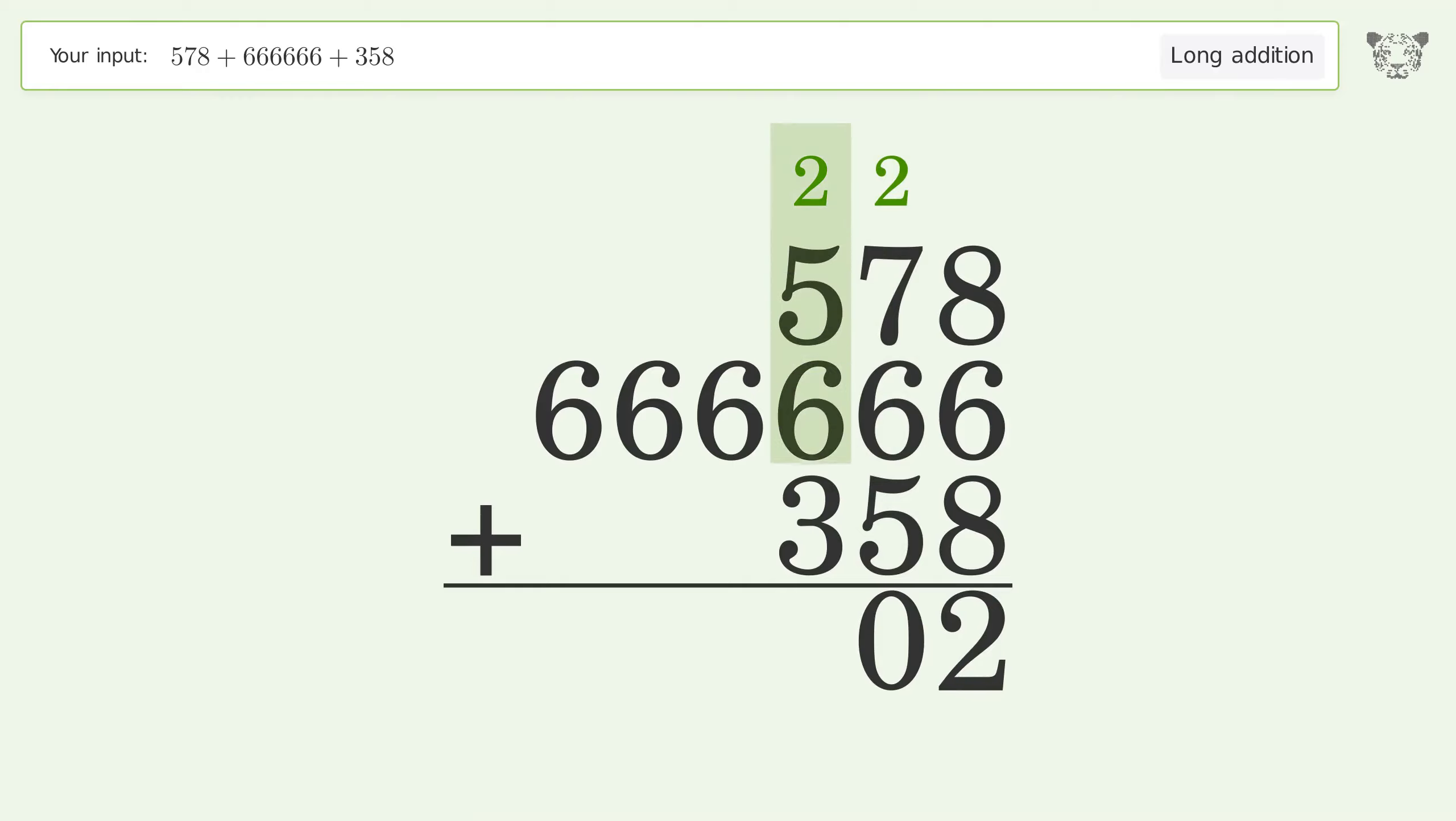2 plus 5 plus 6 plus 3 equals 16, carry 1 to the thousands place. 1 plus 6 equals 7, write 6 in the tens thousands place.